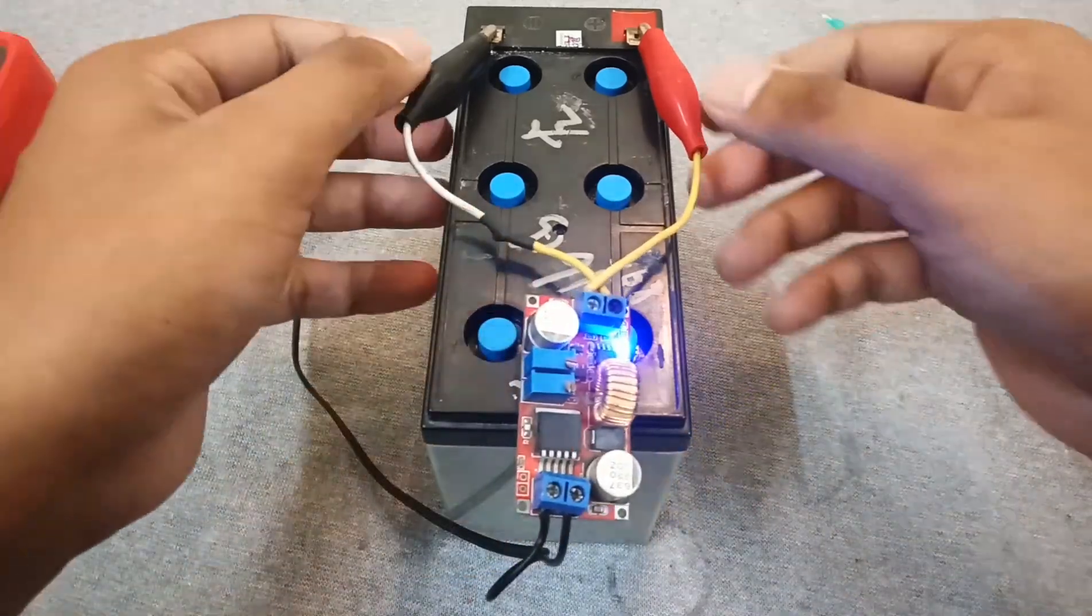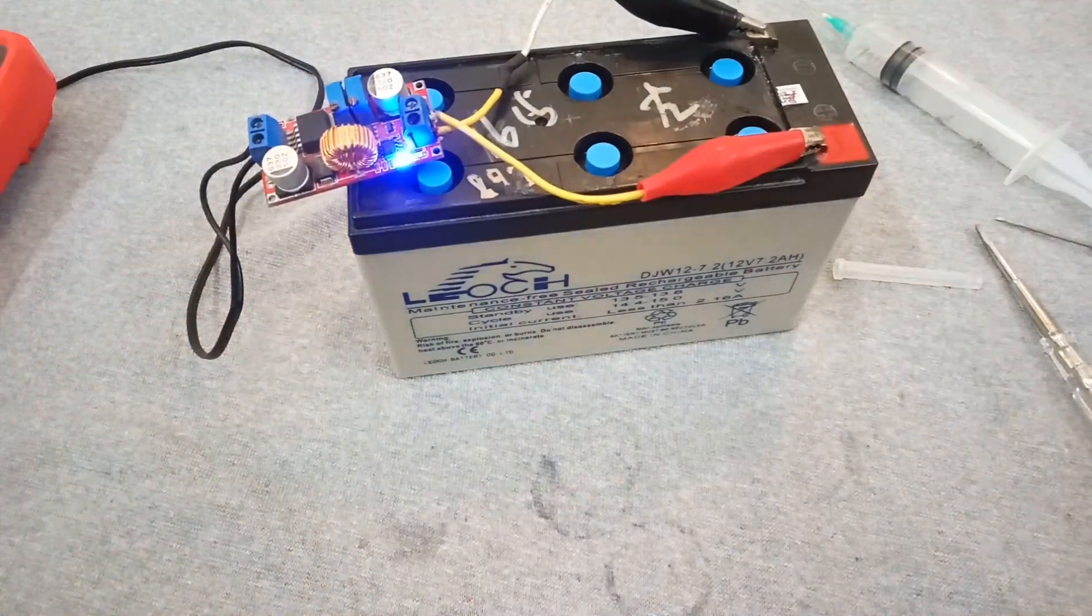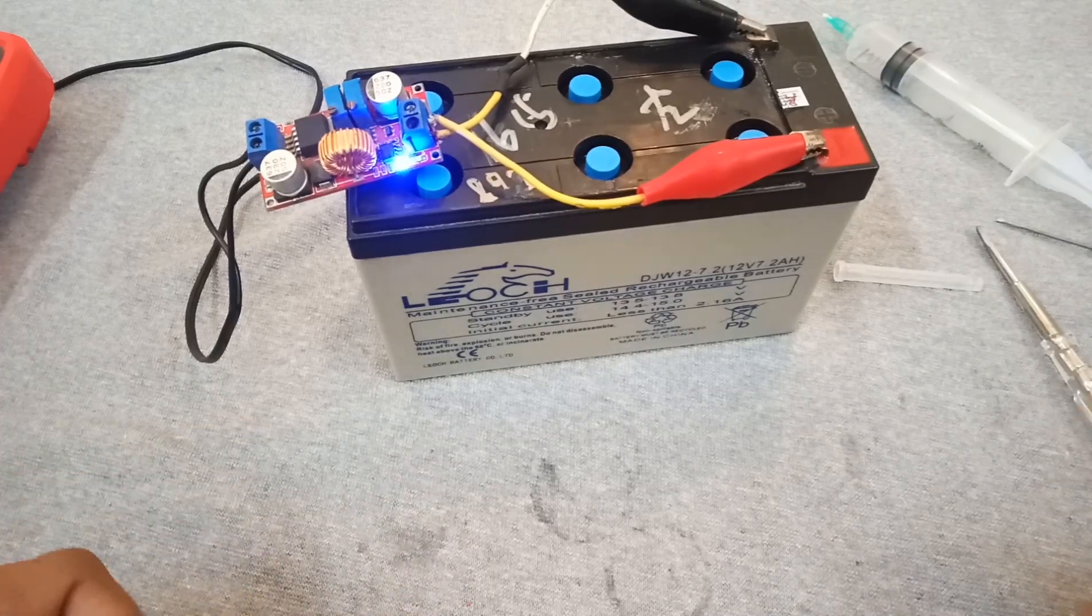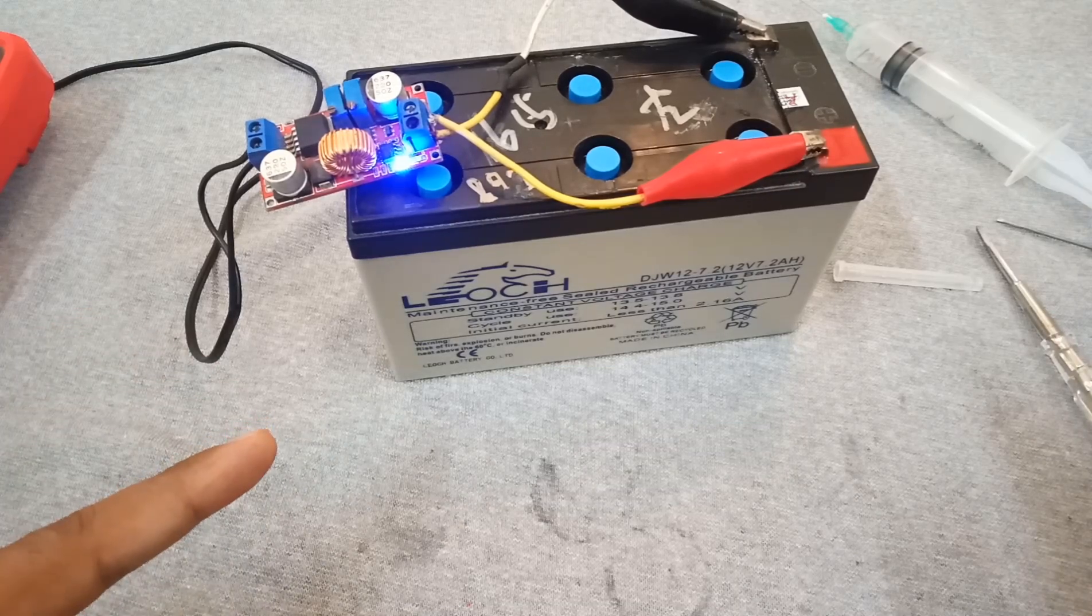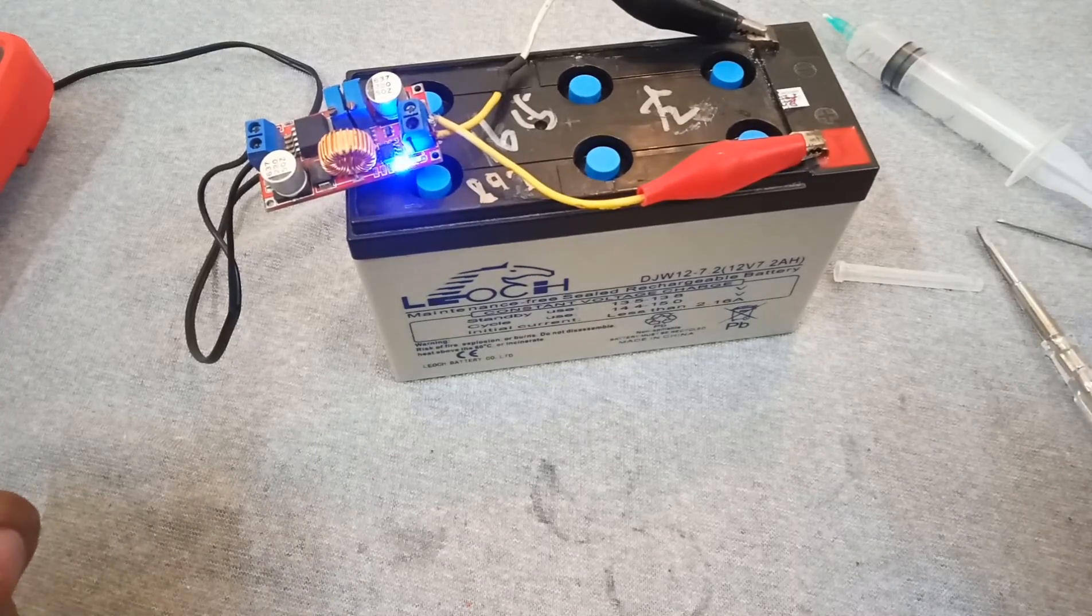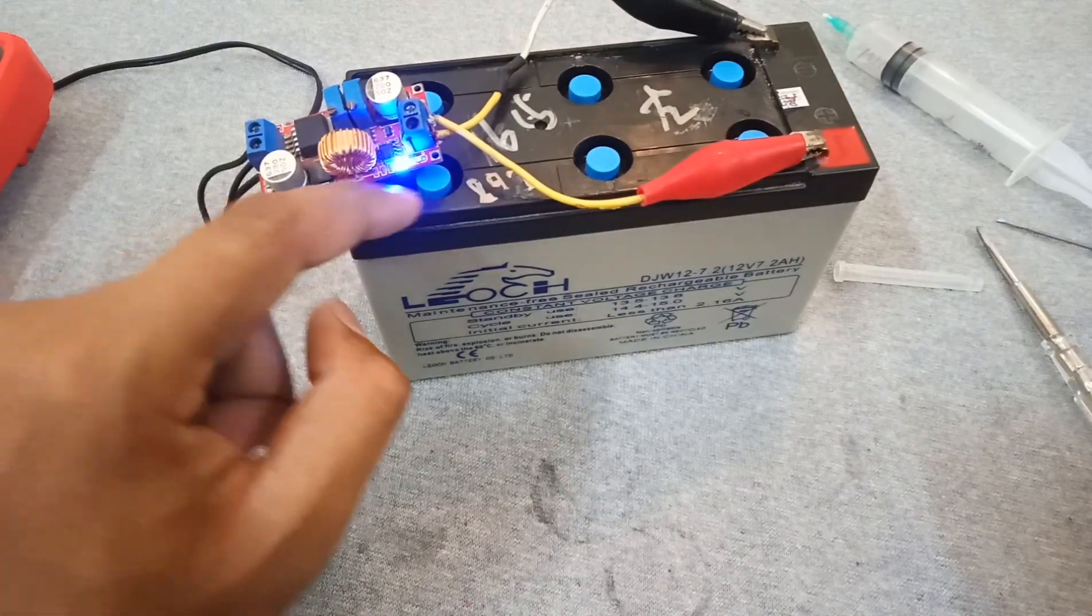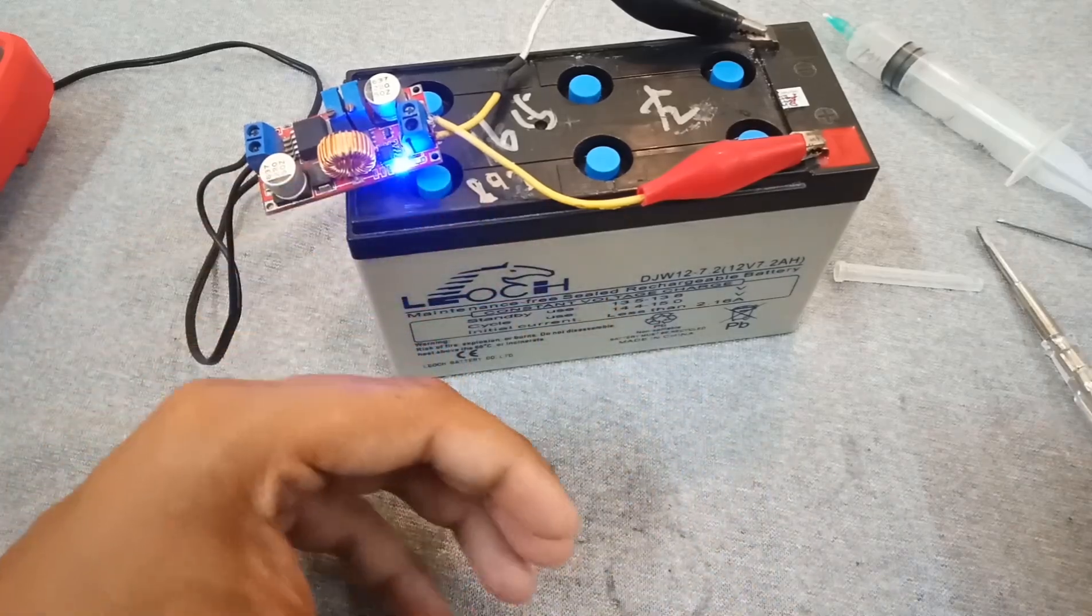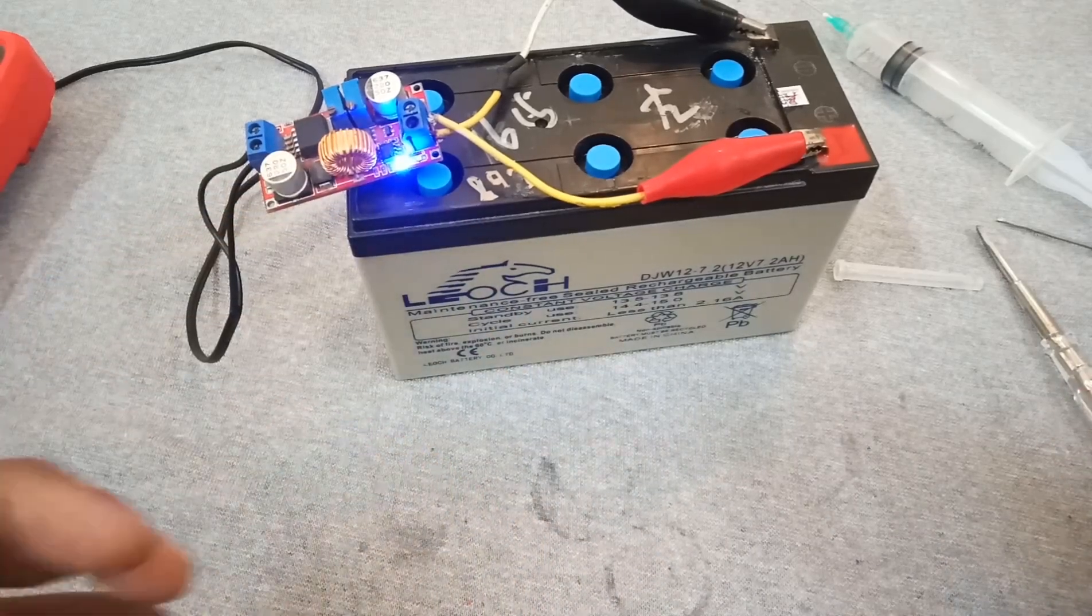In this way you can extend your sealed lead-acid battery's life to about two to three years more. Its chemistry is the same as flooded lead-acid battery, but it has the ability to compensate for water loss. But it cannot do this continuously for about one to two years, so we have to add some amount of distilled water so the electrolyte mixes with it and it starts charging and discharging, and it will give a good backup.